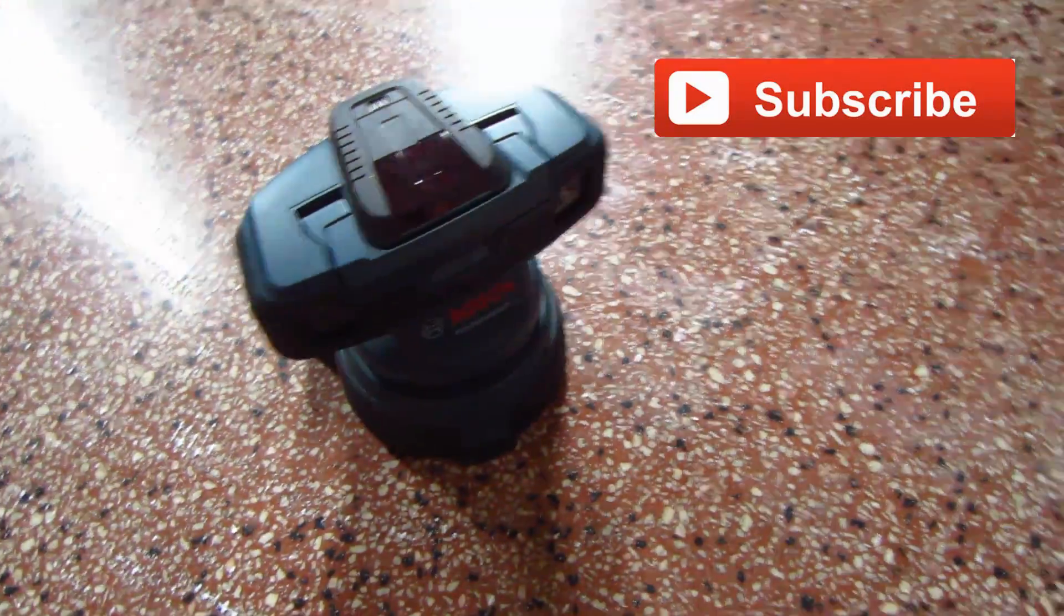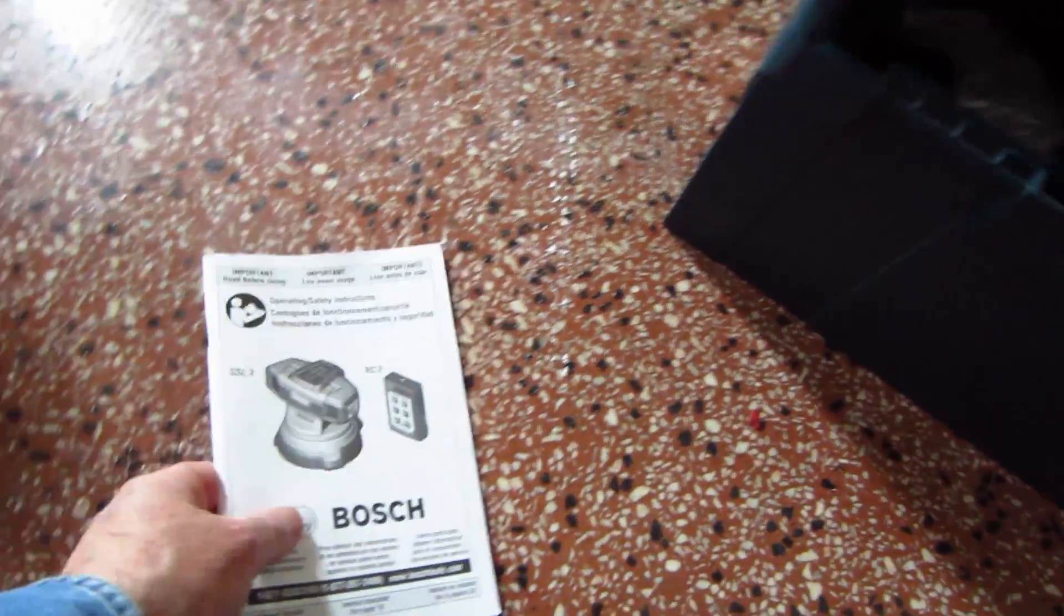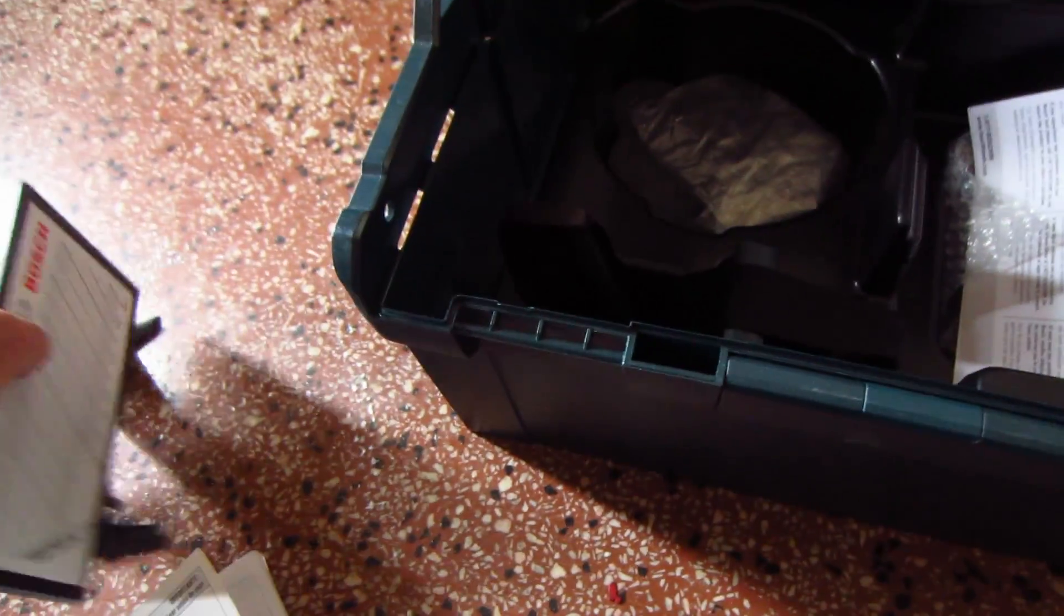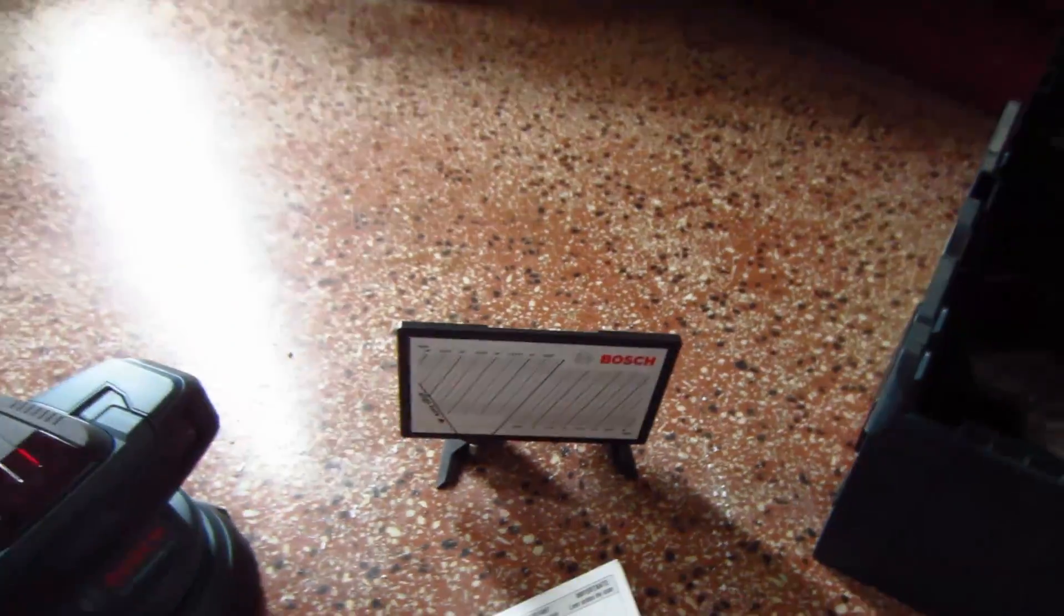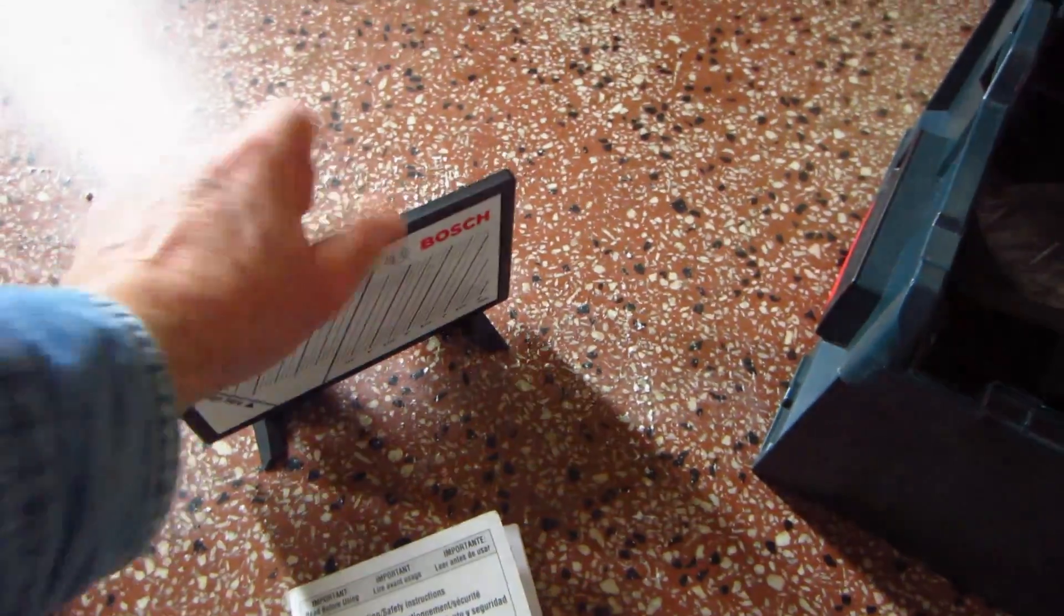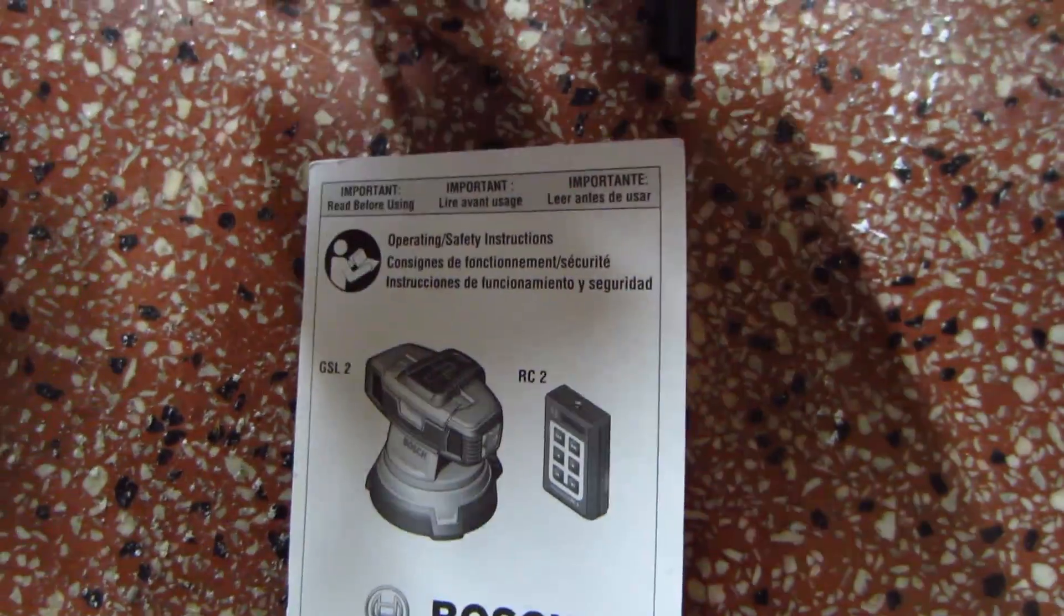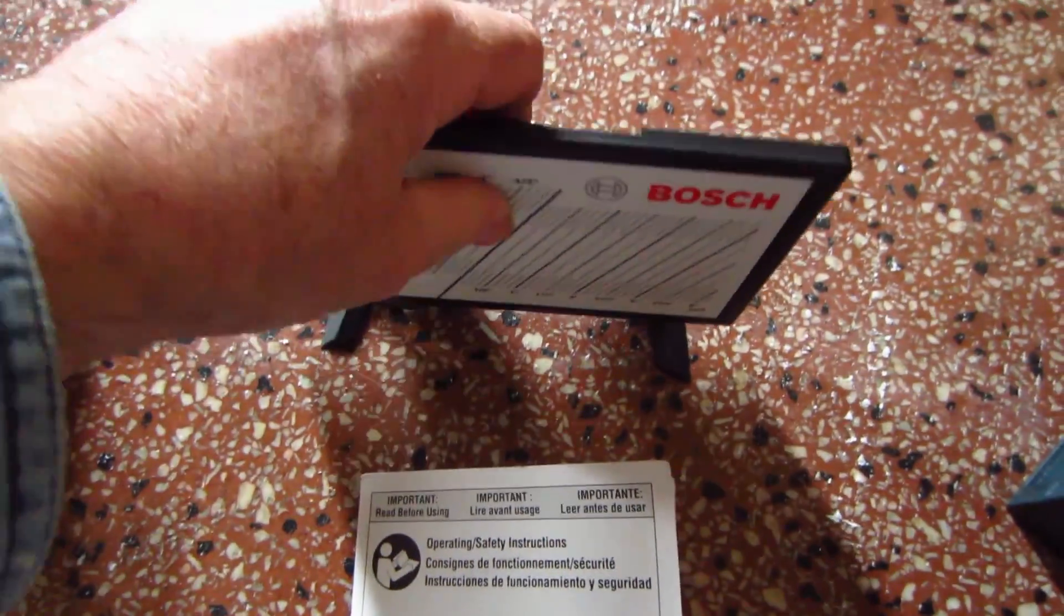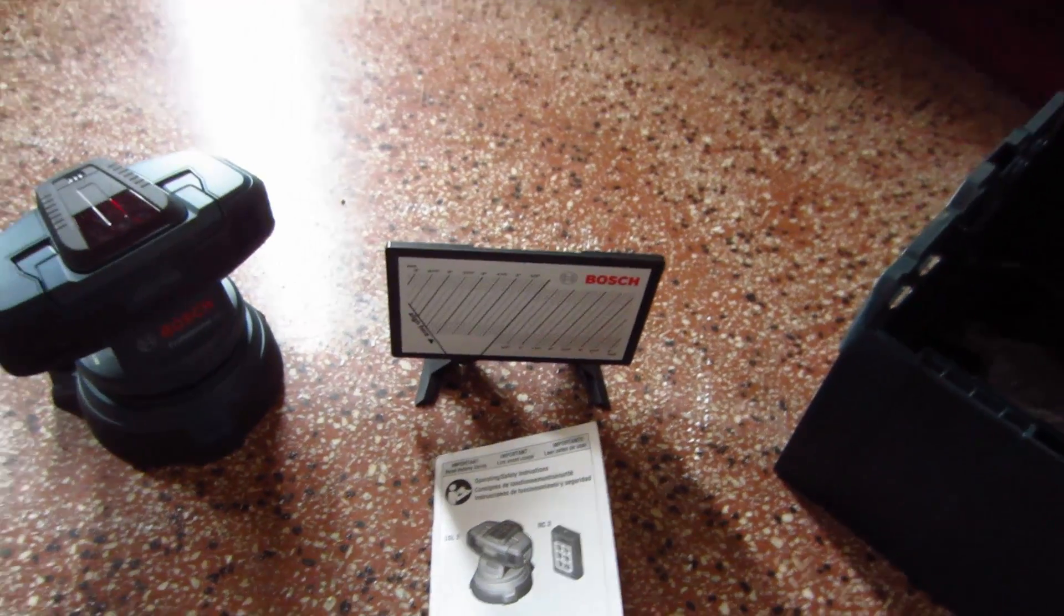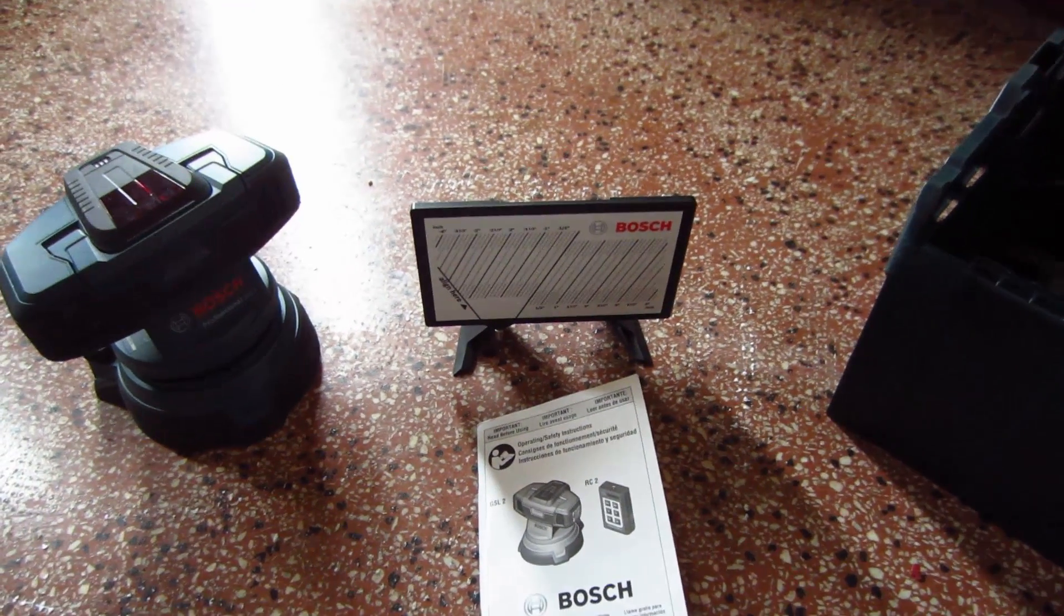It comes with the laser itself, instruction manual, and the target plate. It's magnetic so you can move it up and down. And you're going to use this to measure the difference in height, whether it be higher or lower.